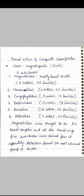Broad outline of Cronquist classification. Class A, Magnoliopsida (dicots), is divided into six subclasses: Magnoliidae with 8 orders and 39 families; Hamamelidae with 11 orders and 25 families; Caryophyllidae with 3 orders and 14 families; Dilleniidae with 13 orders and 78 families; Rosidae with 18 orders and 118 families; and Asteridae with 11 orders and 50 families. These are the six subclasses under the class Magnoliopsida.